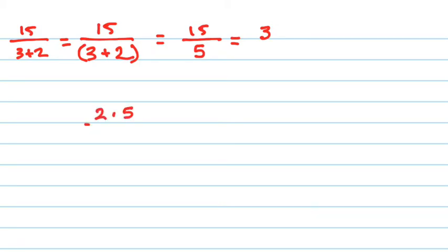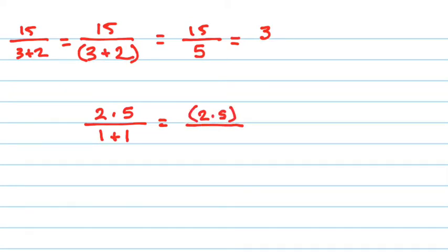Another example: 2 times 5 over 1 plus 1. There are no visible brackets, but remember every fraction's numerator and denominator are always enclosed in brackets. So this is really saying: bracket 2 times 5 bracket, over bracket 1 plus 1 bracket. I'm writing it out so you can see what's happening. In the top, 2 times 5 gives you 10. In the bottom, 1 plus 1 gives you 2. And 10 divided by 2 is 5.